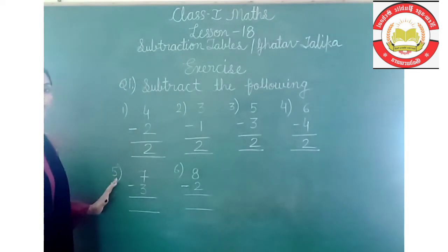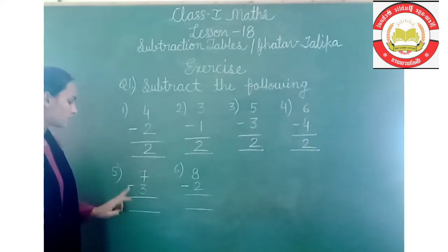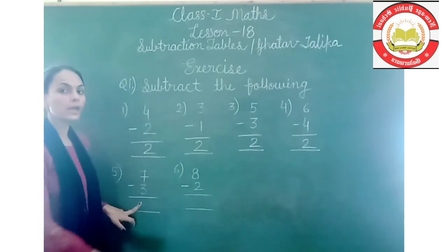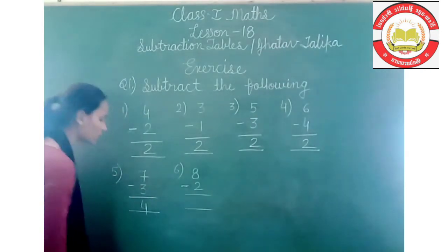And fifth is 7 minus 3. So 7 minus 3 is equal to 4.